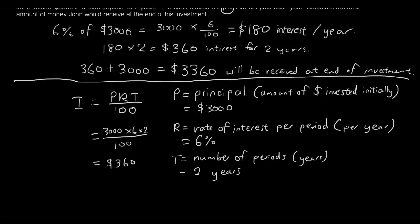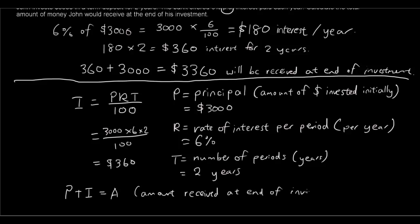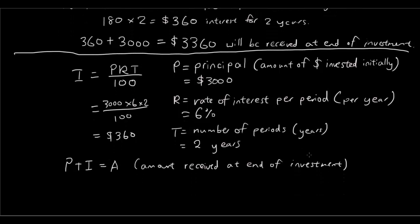That's the quick way of doing it — once you memorize the formula, you don't have to do as much thinking. At the end of the investment, A = P + I gives you A, the amount received at the end. P is three thousand, I is three hundred and sixty, so A equals three thousand three hundred and sixty dollars. That's how you use the simple interest formula. Every year you get one hundred and eighty dollars, and over two years it's three hundred and sixty — that's why it's called simple interest.